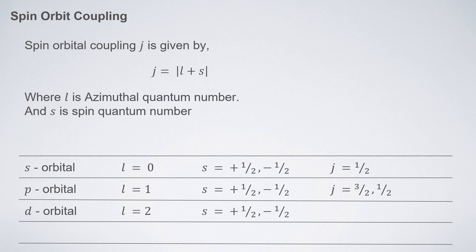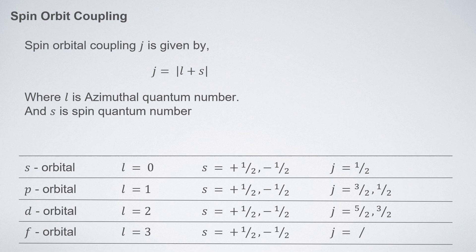For d orbitals, l equals two and s is always plus or minus one-half, so j becomes two plus one-half equals five-halves, or two minus one-half equals three-halves. For f orbitals, l equals three and s equals plus or minus one-half, so j becomes three plus one-half equals seven-halves, or three minus one-half equals five-halves.